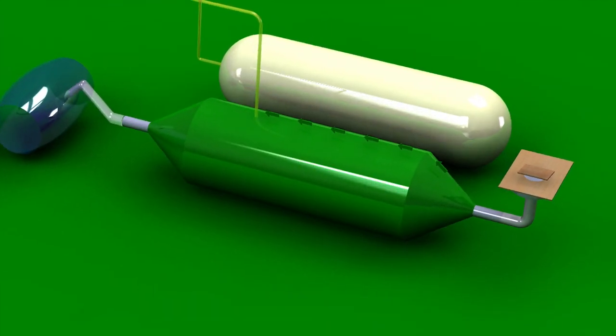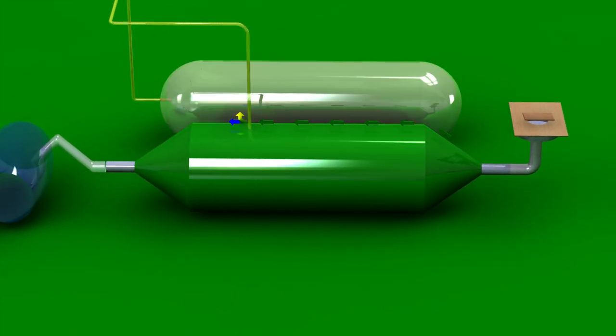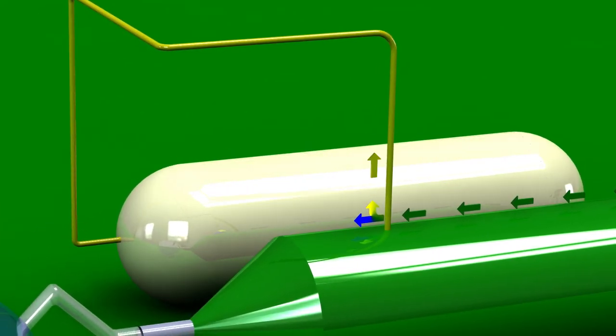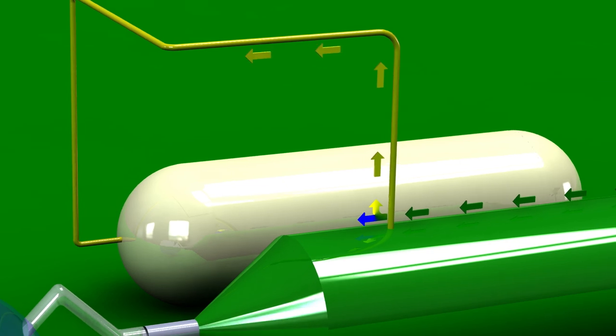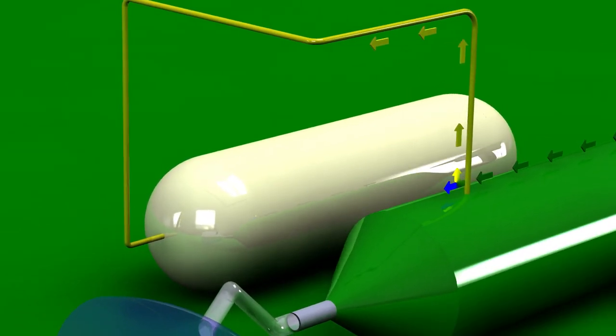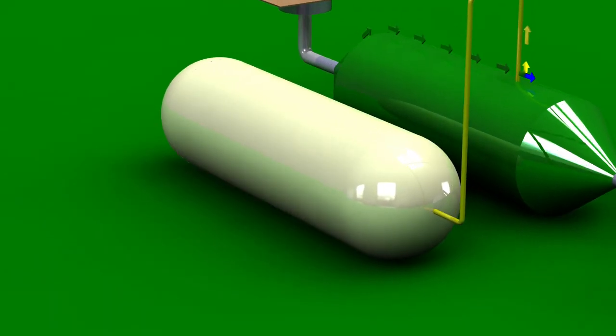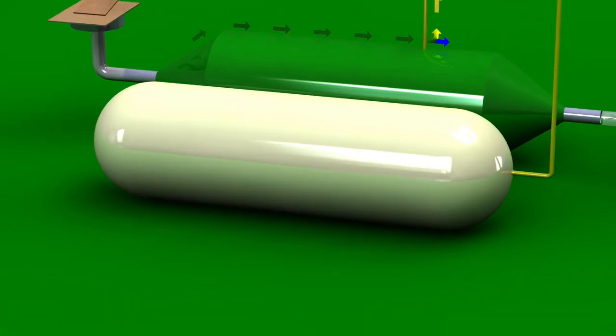The stomach produces two outputs, methane and fertiliser. The yellow pipe leads to the gas storage bag. The gas produced is called methane, which is flammable. The methane can be used for cooking or it can be put into a generator that produces electricity. Just one kilogram of waste can run a stove for an hour or a light bulb for 90 hours.